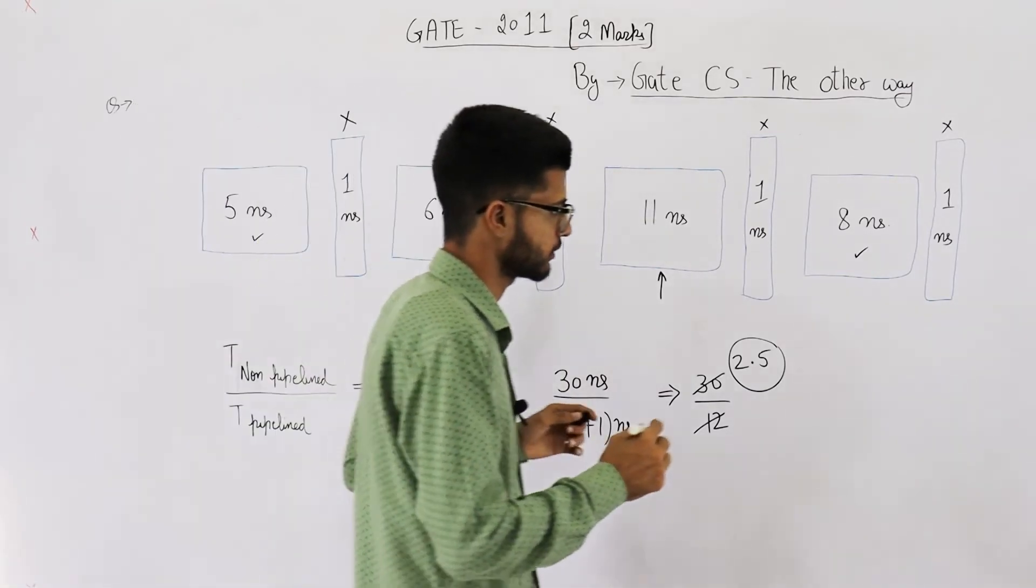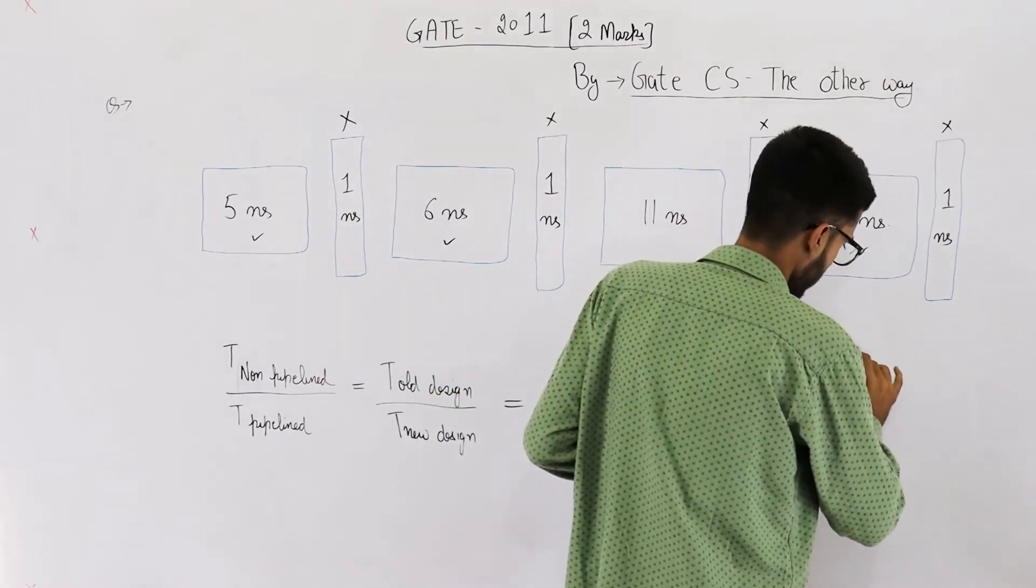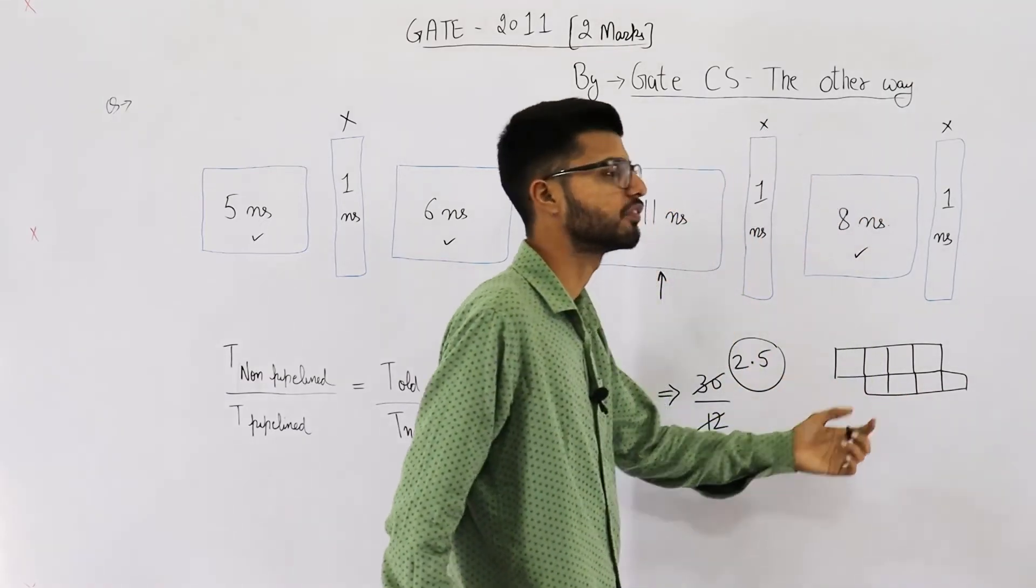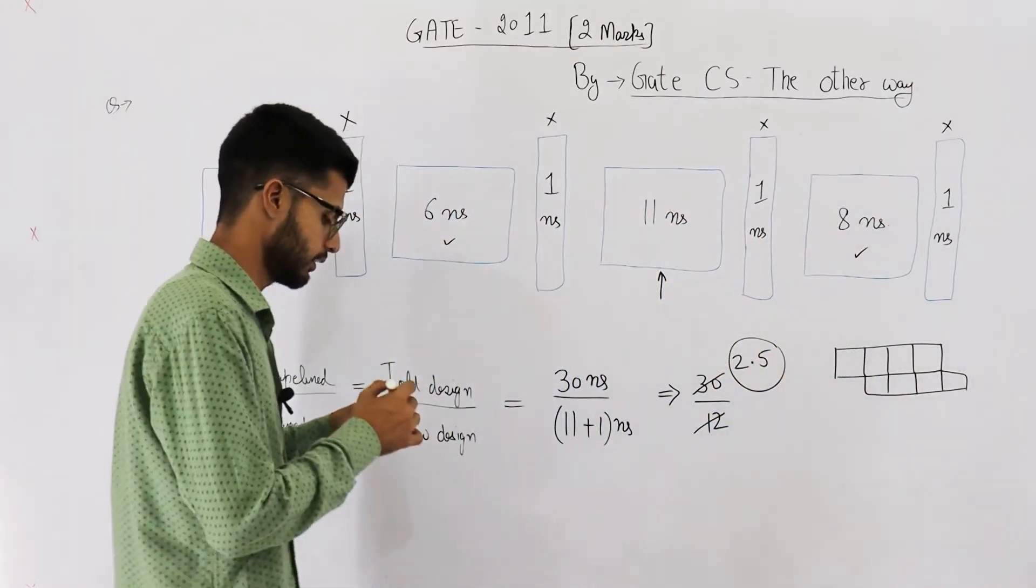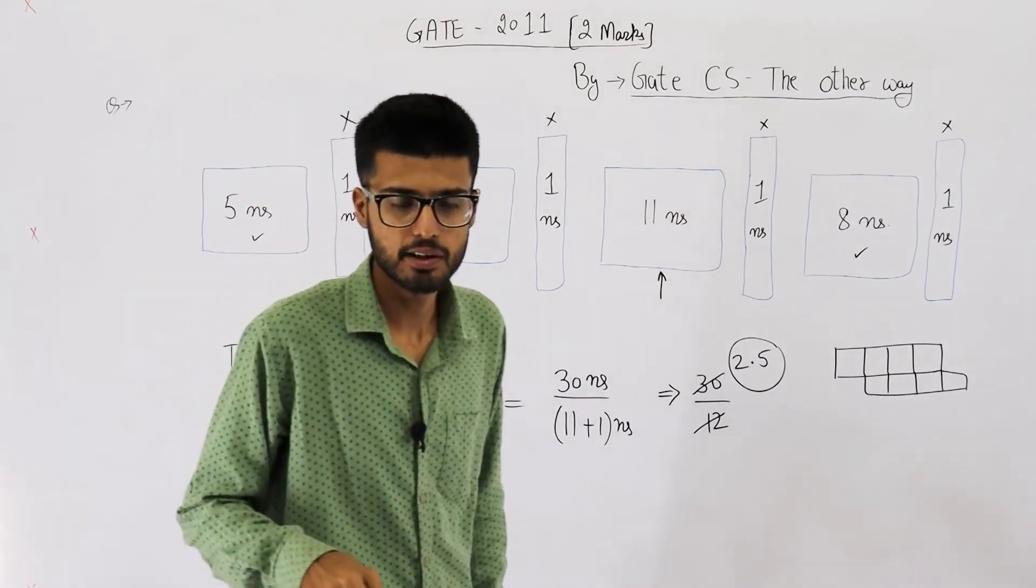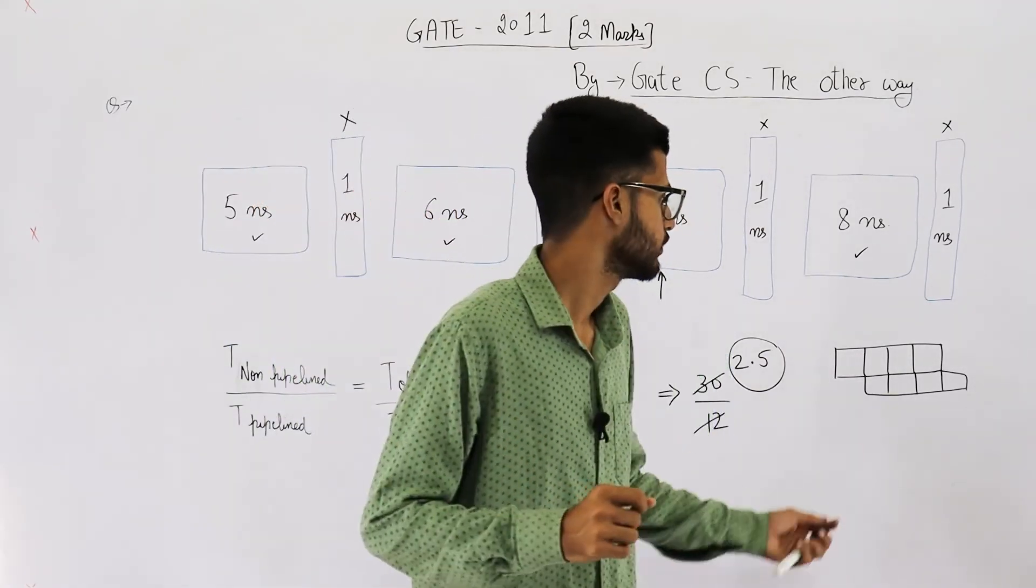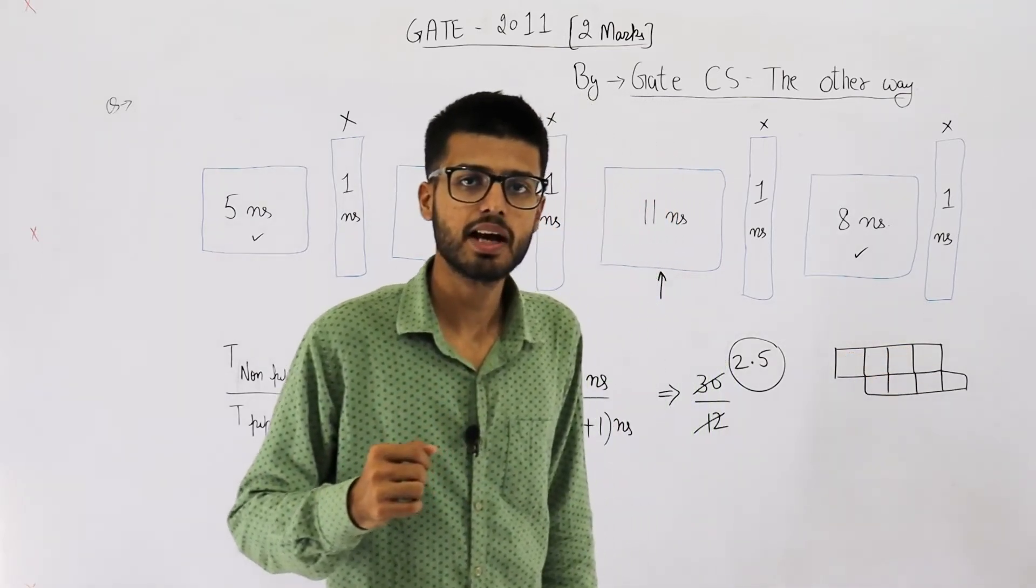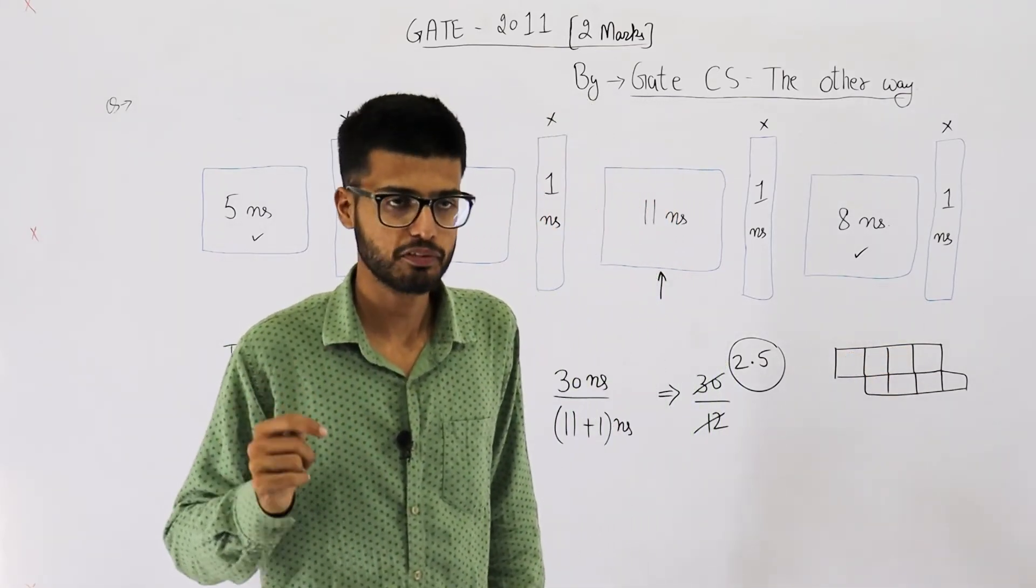For 2 instructions, what is going to happen is, for 2 instructions, 5 clocks will be needed. That means the average CPI is 2.5, 5 divided by 2. Now you can see, for 1 instruction, average CPI is 4. For 2 instructions, average CPI is 2.5.